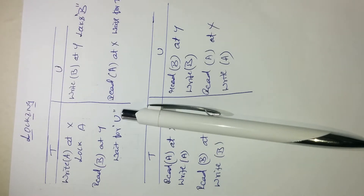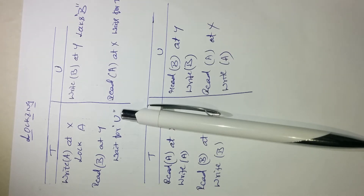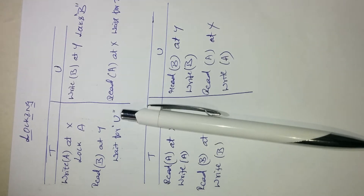Hello everyone, today I am going to discuss a topic on distributed transactions. In the previous session we discussed about flat and nested distributed transactions, nested banking transactions, how distributed banking transactions should be applied in a nested banking transaction, and also the meaning of atomic commit protocol. There are two types of atomic commit protocols: one-phase atomic commit protocol and two-phase commit protocol.